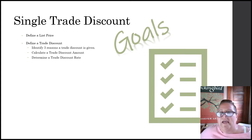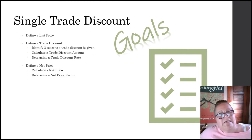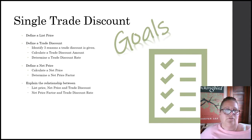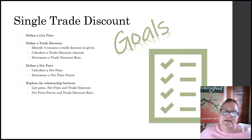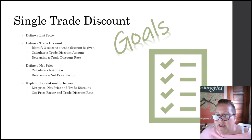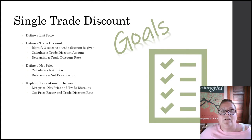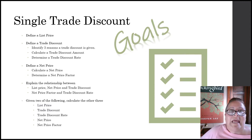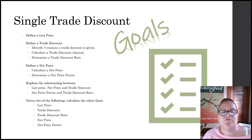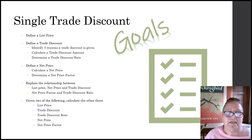We want to calculate the trade discount amount and determine the trade discount rate. We will also be looking at the net price — what a net price is, how to calculate it, and what a net price factor means. We want you to be able to explain the relationship between a list price, a net price, and the trade discount, and how those three items are related to each other, as well as the net price factor and the trade discount rate — they also have a special relationship.